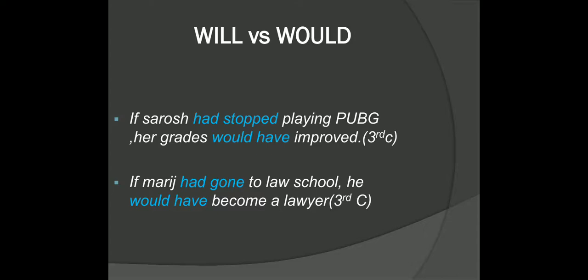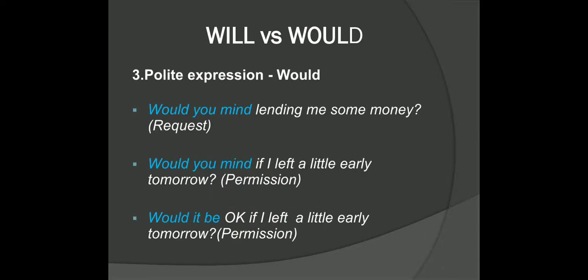Let's now turn to the final difference between will and would, and that is polite expressions. For the purpose of politeness, we use would, not will. For example: 'Would you mind lending me some money?' or 'Would you mind if I leave a little early tomorrow?' The first sentence is a very polite request. Notice that after 'would you mind' we use the -ing form, like 'lending.' This is the correct form when you want to make a request with these expressions.